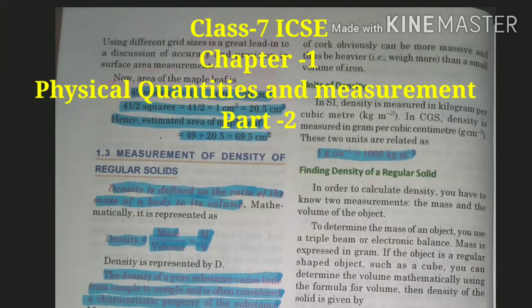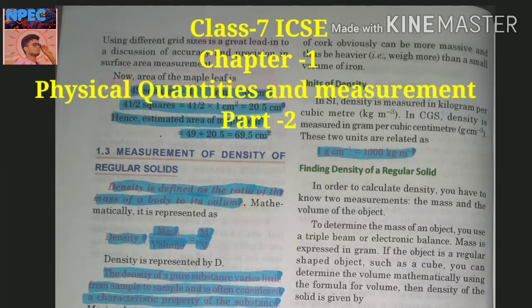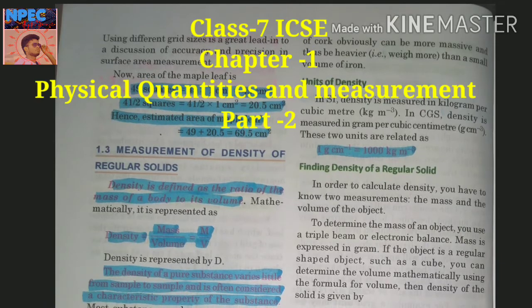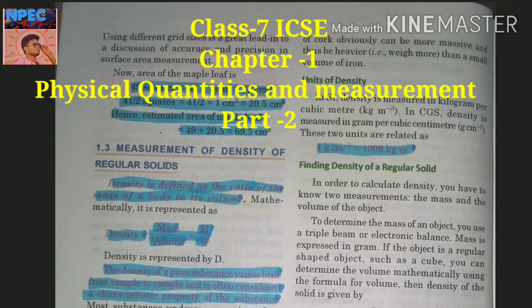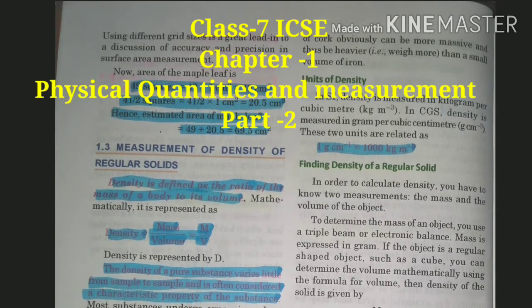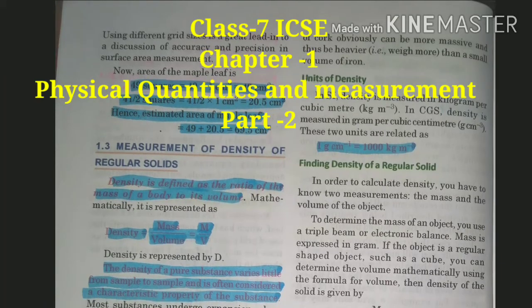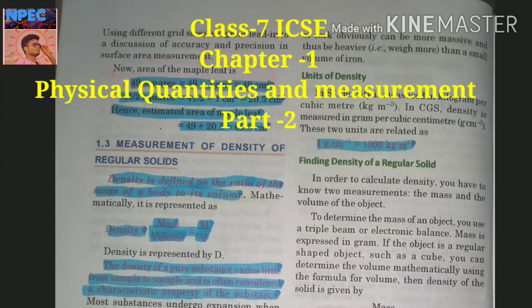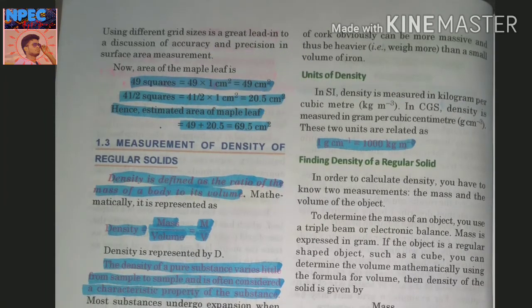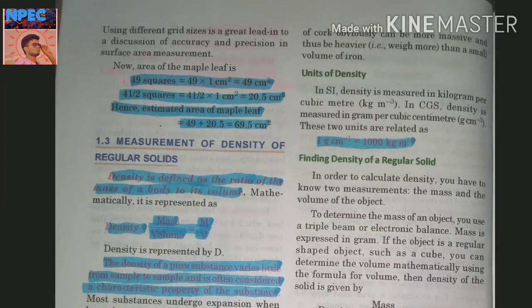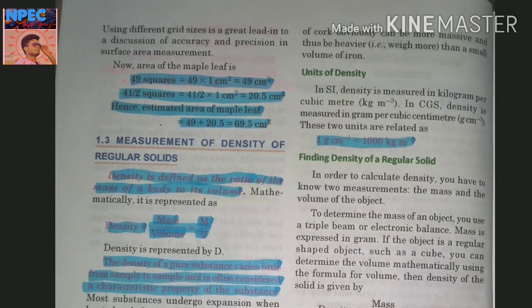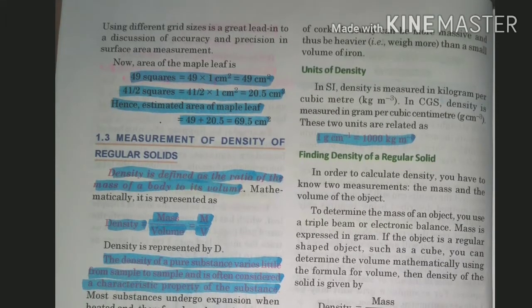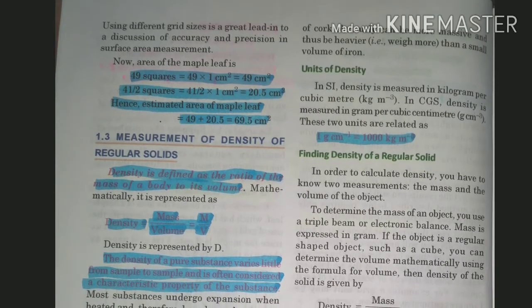This is Physics Class 7, ICSC board, Chapter 1, Physical Quantities and Measurements. This is Part 2. In Part 1 we covered measurements of density of regular solids. This is Part 2.